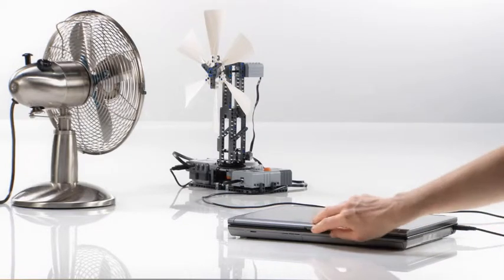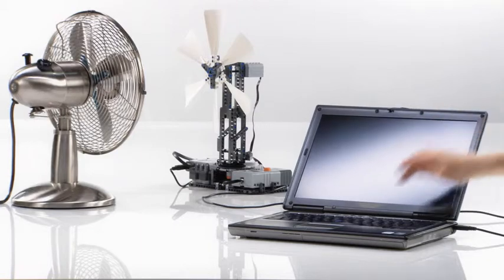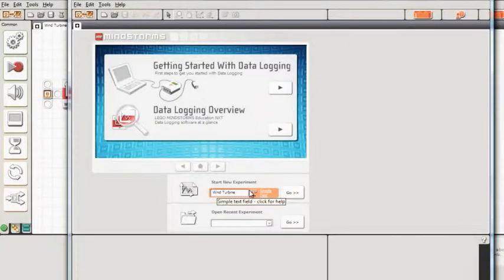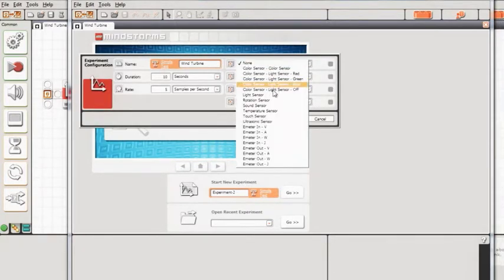Now, let's program and log data to investigate the wind turbine's ability to generate power. Before you open and run the data logging program, set up the data logging experiment as described in the activity guide.